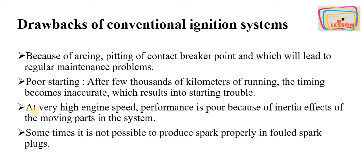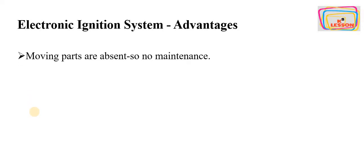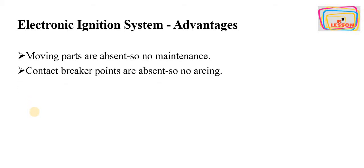Now we will discuss some of the advantages of the electronic ignition system and why we use it. First of all, moving parts are absent, so we require less maintenance or no maintenance. Contact breaker points are also absent, so there is no arcing present.